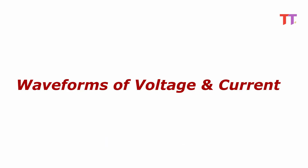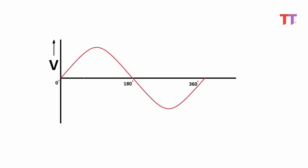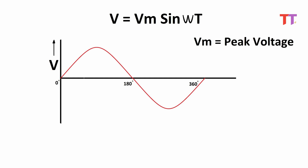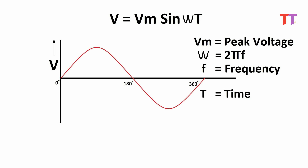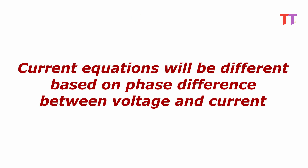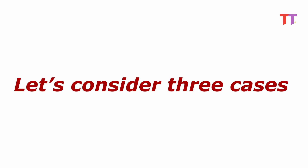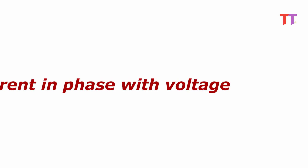Now let's consider waveforms of voltage and current. This is the voltage waveform. The voltage equation is v equals Vm sine omega t, where Vm is the peak value of voltage, omega equals 2 pi f, where f is frequency and t is time. Current equations will be different based on the phase difference between voltage and current. Let's consider three cases.